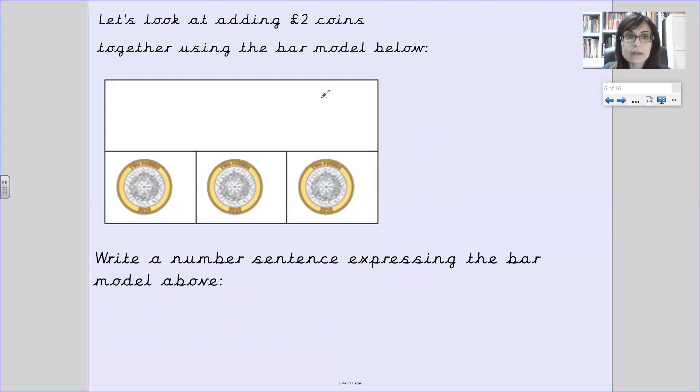Let's look at adding two pound coins together using the bar model. This one says two pounds. This one is also two pounds and this one is two pounds. So we can say two pounds plus another two pound coin and we've got one more. Another two pound coin. What do we get? I'm going to give you a moment to have a think. You can pause the video if you'd like a little bit longer. One way that I would count these, I would count in twos. So I would say two, four, six, which gives me six pounds.